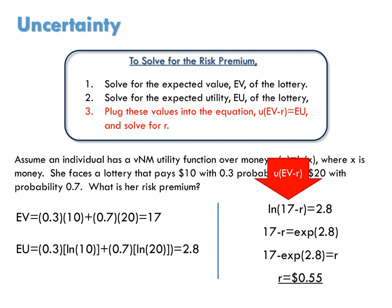What 55 cents means is, if you ask this individual: you can either play that lottery, or I'll give you $17 minus 55 cents, or $16.45 — that would make the individual indifferent between choosing the lottery or choosing the $16.45 with certainty.